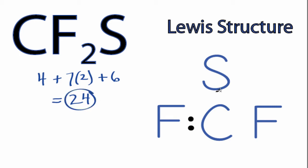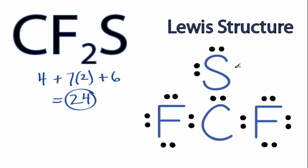We'll put 2 electrons between atoms to form chemical bonds. We've used 6, then we'll go around the fluorines and sulfur to complete their octets. So we have 6, 8, and 24 valence electrons. We've used all of the valence electrons for the CF2S Lewis structure.